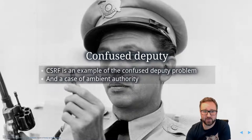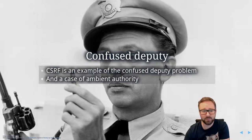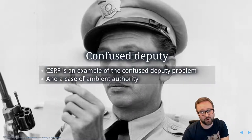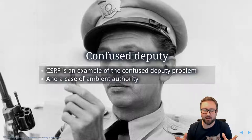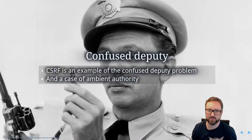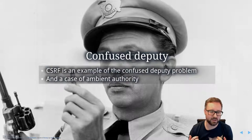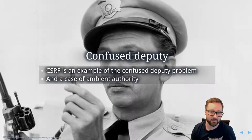Finally, cross-site request forgery is an example of a confused deputy problem. One of the reasons why CSRF is a problem is because of the ambient authority that your web browser has — the ability to automatically assume that you are the one initiating all of the interactions. I'm going to record a separate short video describing those two concepts, and following that I'll record several videos on how to prevent these attacks, and maybe a demo and some examples.